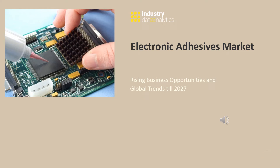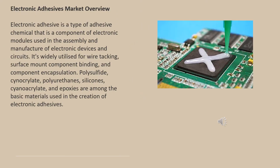Electronic Adhesives Market: Rising Business Opportunities and Global Trends Till 2027. Electronic adhesive is a type of adhesive chemical that is a component of electronic modules used in the assembly and manufacture of electronic devices and circuits. It is widely utilized for wire tacking, surface mount component binding, and component encapsulation.